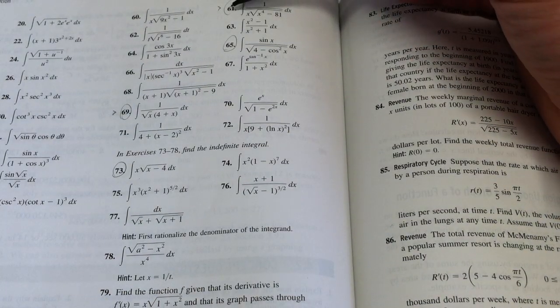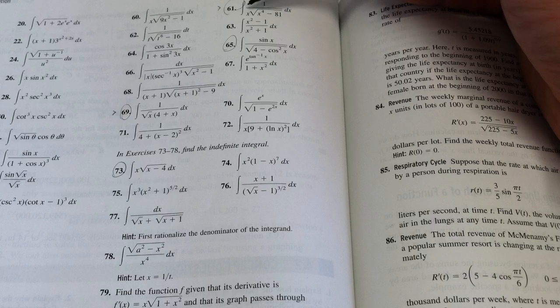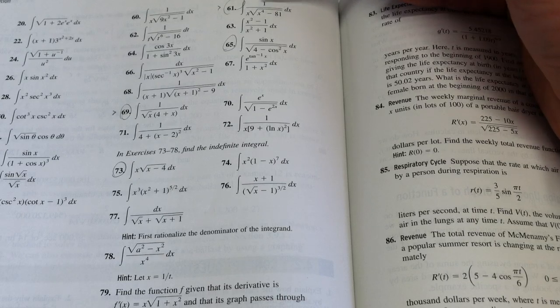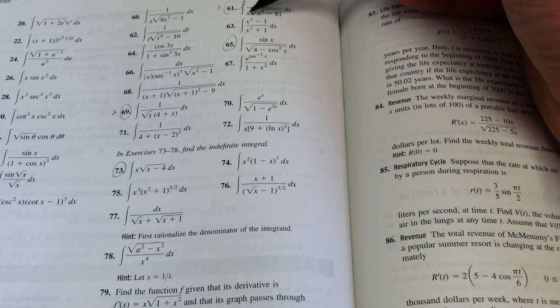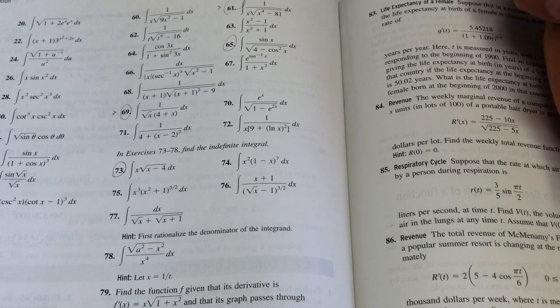Okay, on to 61 in section 4.2, that's u substitution, that's page 426, and it says find the integral of 1 over the quantity x root x to the fourth minus 81 dx.